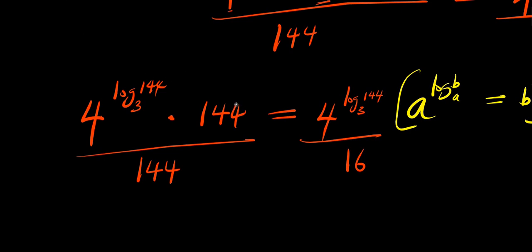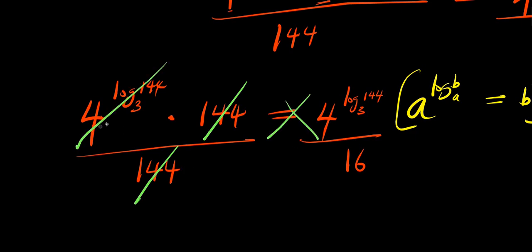The 144 in the numerator cancels with the 144 in the denominator. Cross-multiplying, the 4 to the power of (log 144 to the base of 3) also cancels with the same term on the other side. So we end up with 1 equals 1 over 16.